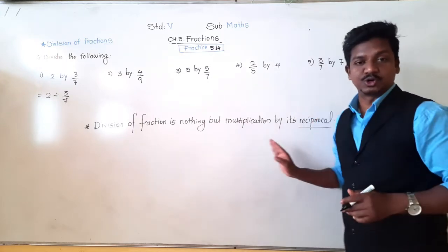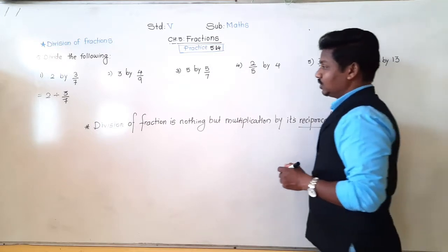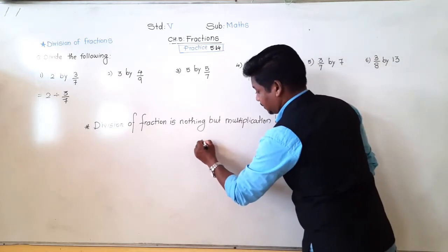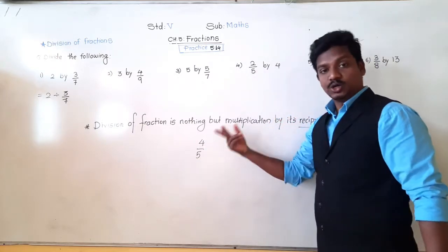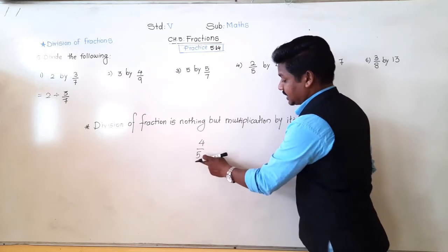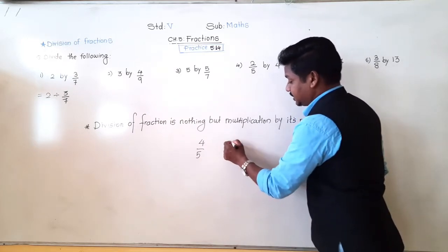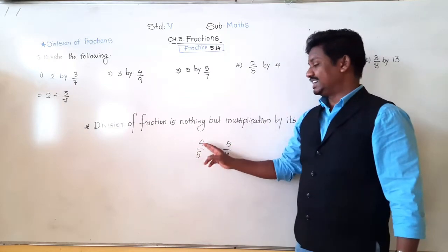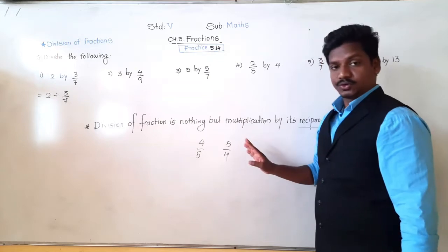Now, what is the meaning of reciprocal? Reciprocal means: see, if 4 upon 5 is there, what is the reciprocal of 4 upon 5? 4 is in the numerator and 5 is in the denominator. So reciprocal means 5 will come in the numerator and 4 will go in the denominator. So 4 upon 5 and its reciprocal is 5 upon 4.